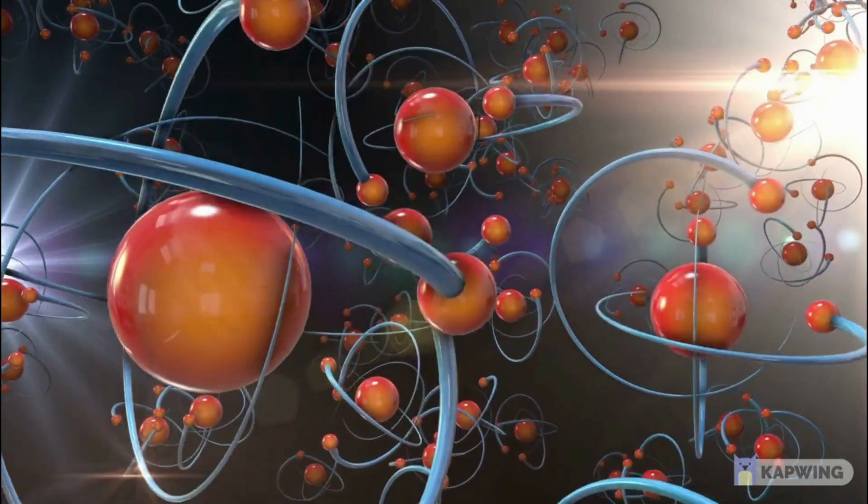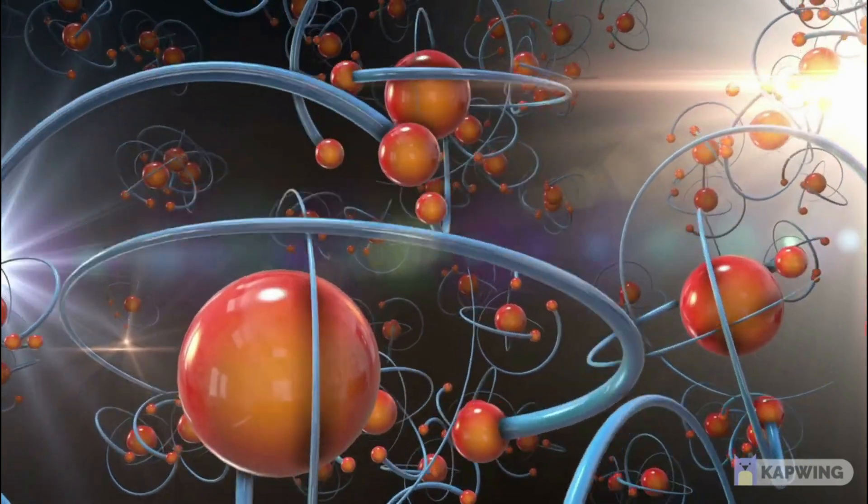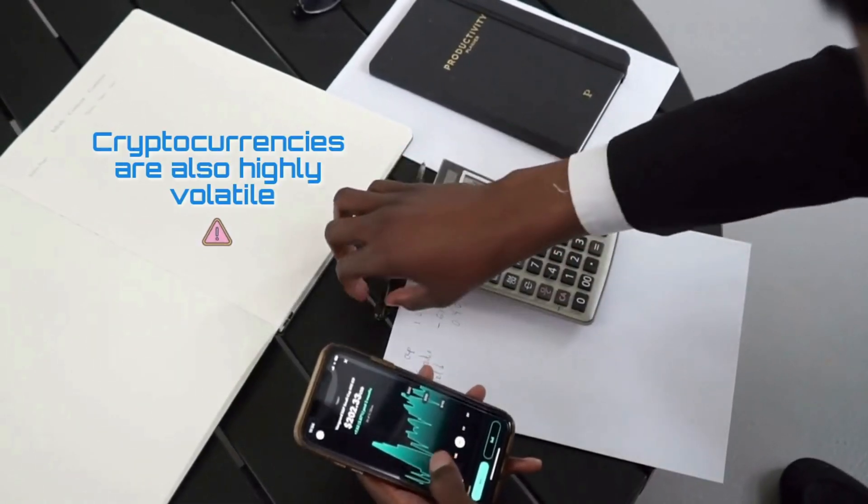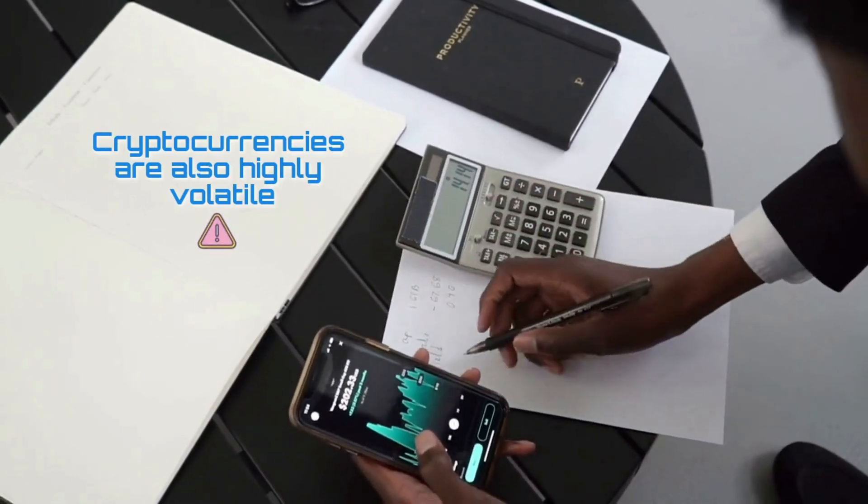This is mainly due to the fact that it is a distributed asset issuance protocol on the blockchain. Cryptocurrencies are highly volatile, so your cash can go down as well as up in the blink of an eye.